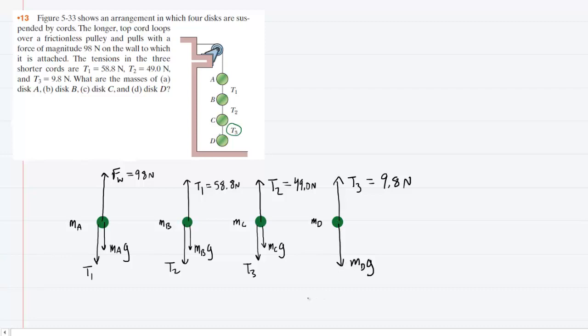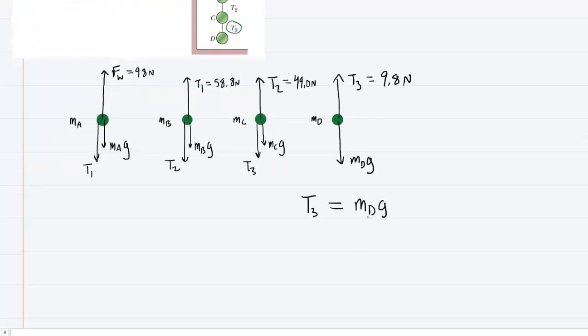So what this means is that for disk D, the tension T3 that points upward must have the same magnitude as the gravitational force that points downward. So we're going to set T3 equal to the mass of disk D times G. This is the gravitational force.